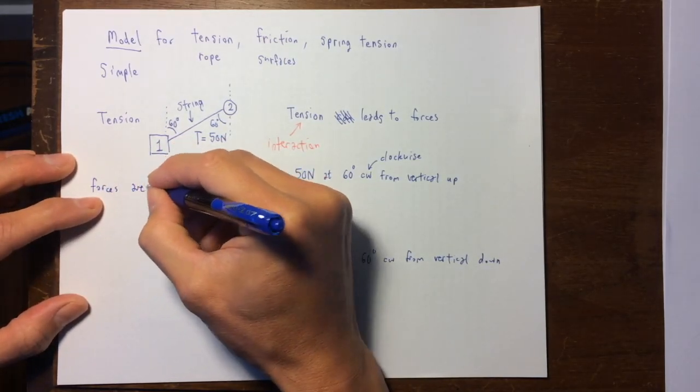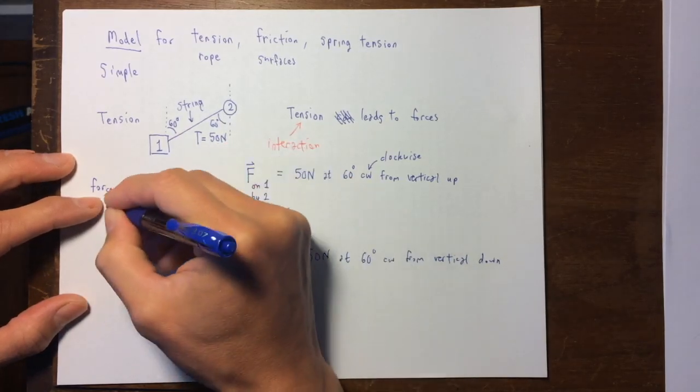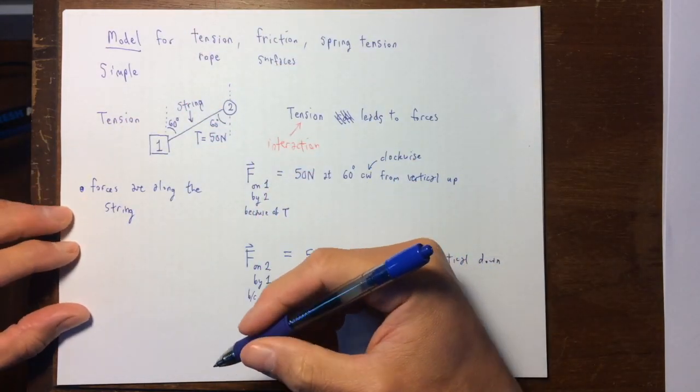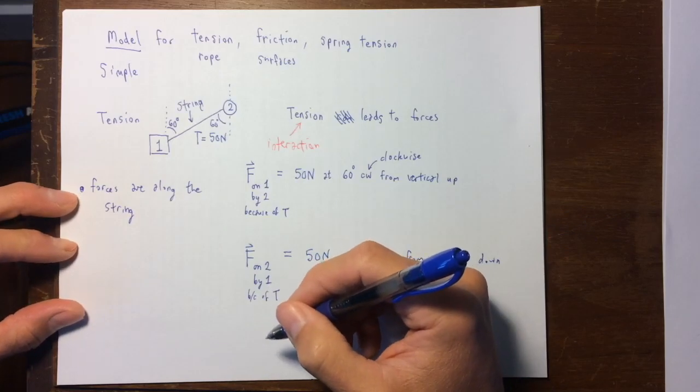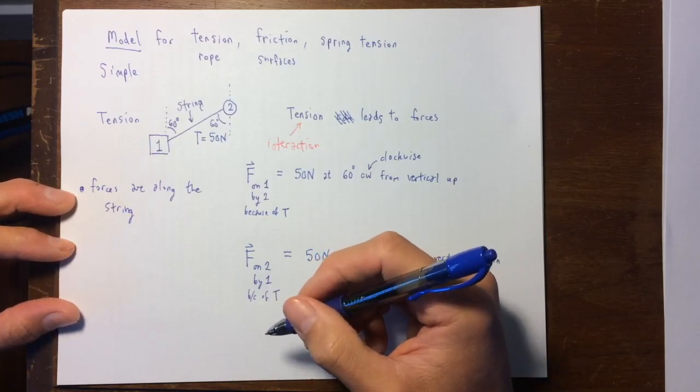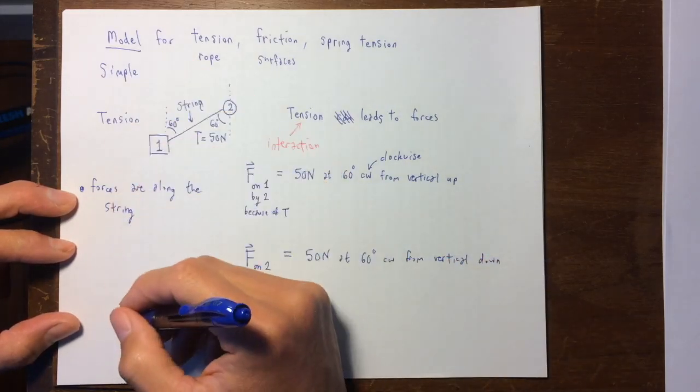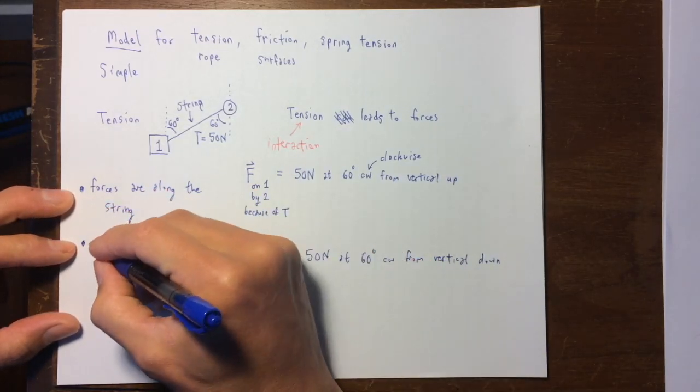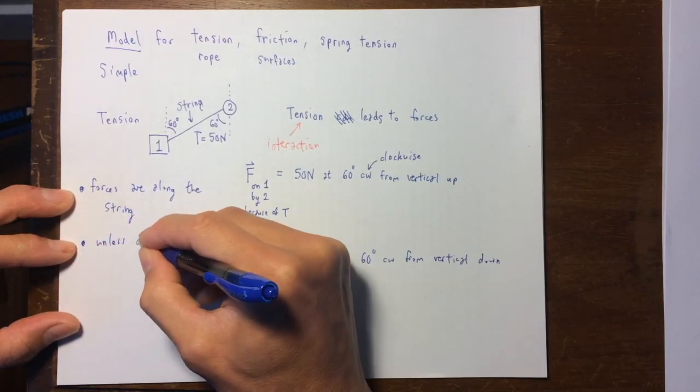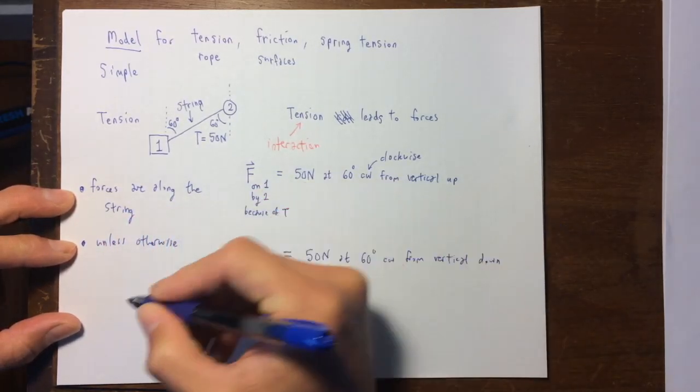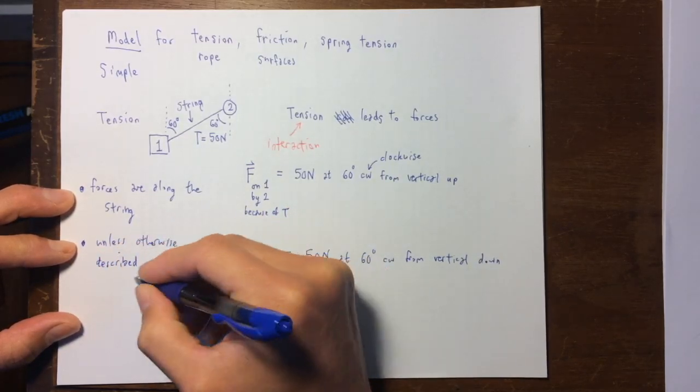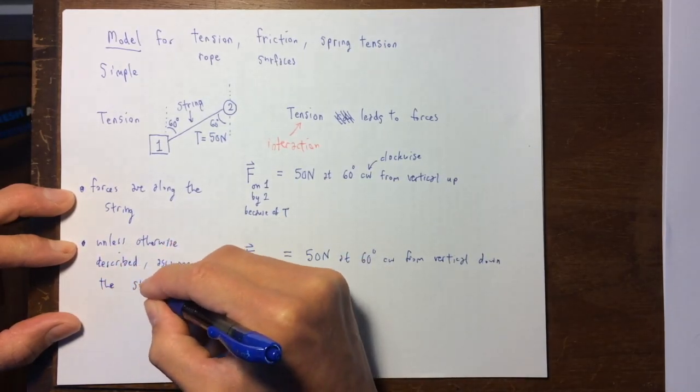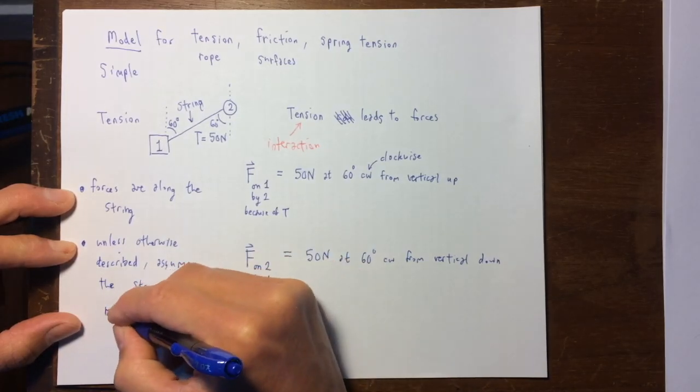So, the forces are along the string, that's one of the model ideas. So it's simple, and that's honestly probably what you would have expected or guessed yourself, if you were the original engineer modeling a string tension force. Another comment to make though, is, unless otherwise described in a problem, assume the string is massless.